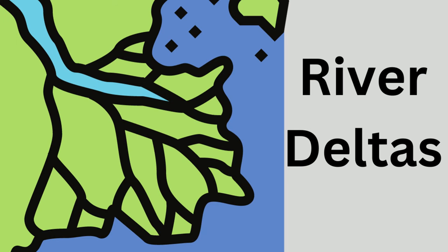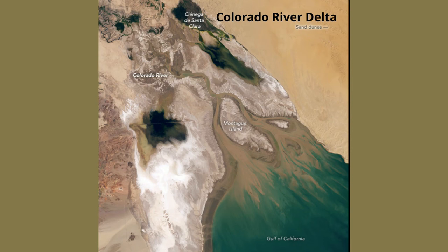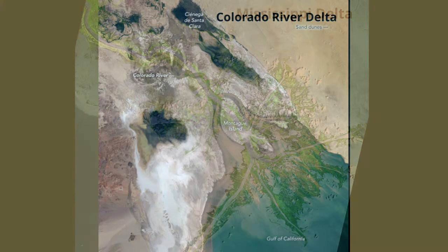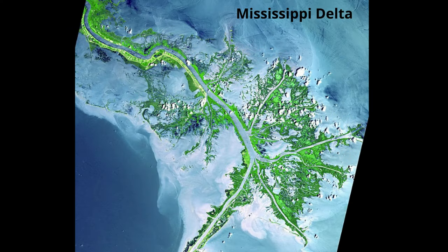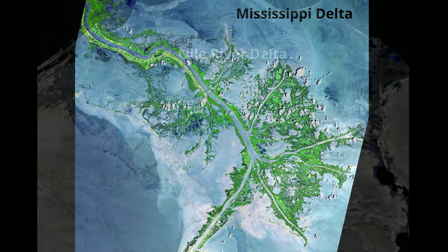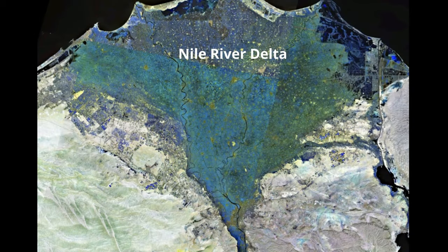Here are a couple of famous river deltas: the Colorado River Delta, the Mississippi River Delta, and the Nile River Delta.